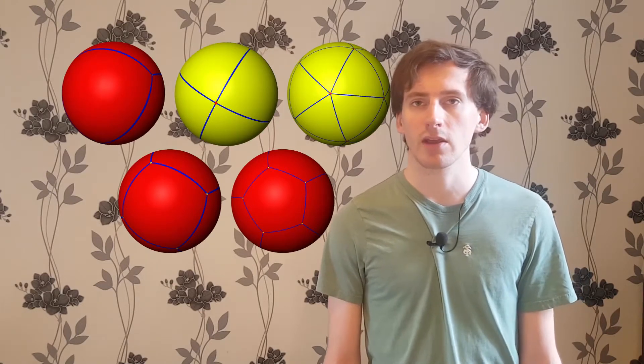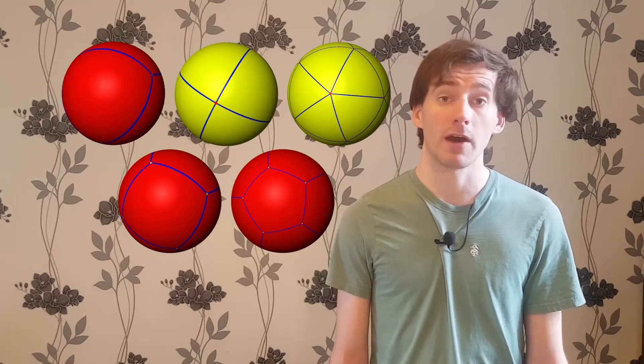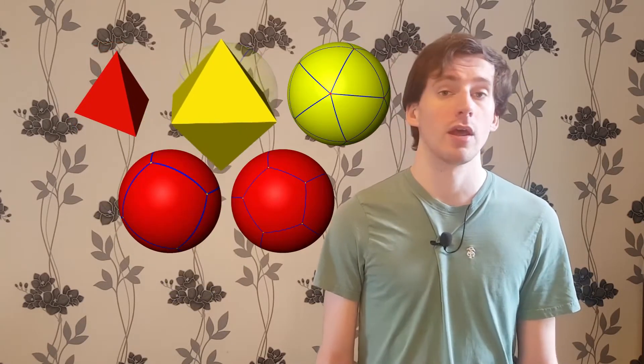Do these tilings remind you of anything? They might remind you of the five platonic solids. The tetrahedron, the octahedron, the icosahedron, the cube, and the dodecahedron. In fact, if we flatten off each of the tiles in these tilings, we get the corresponding platonic solid. And if we inflate each of the platonic solids, we get the corresponding tiling.